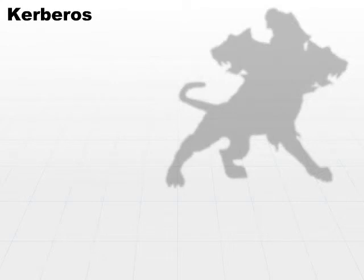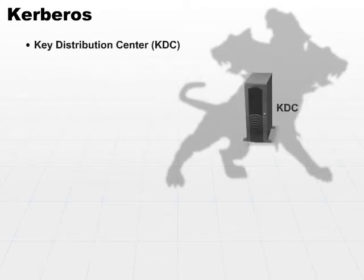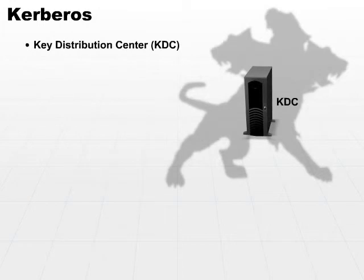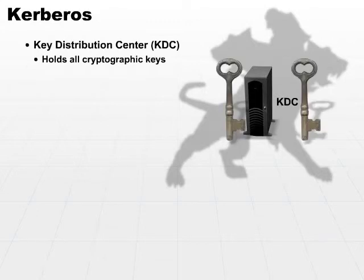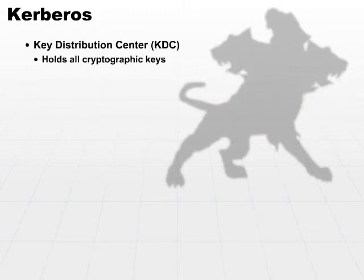Some of the components in a Kerberos system include the Key Distribution Center, referred to as the KDC. The KDC holds all of the cryptographic keys. Using symmetric key cryptography, we use the same key to encrypt and decrypt our tickets or our messages. The KDC holds all the cryptographic keys, so you must talk to the KDC at every phase in order to initiate any type of authentication. Kerberos uses the concept of tickets.